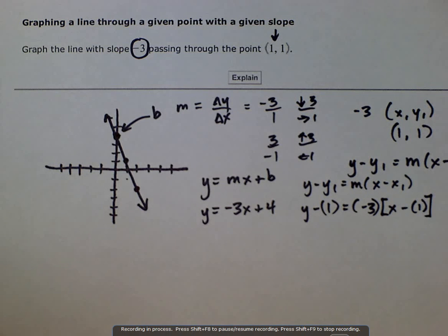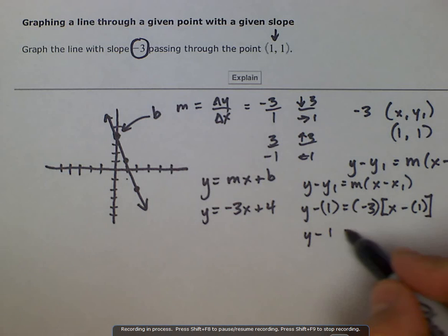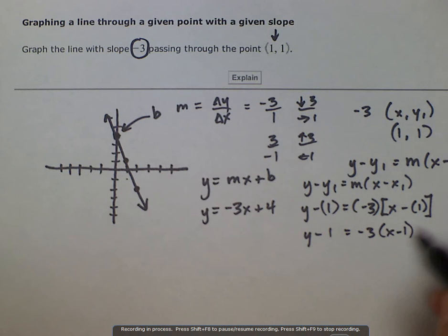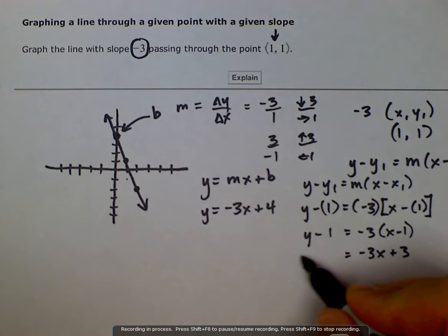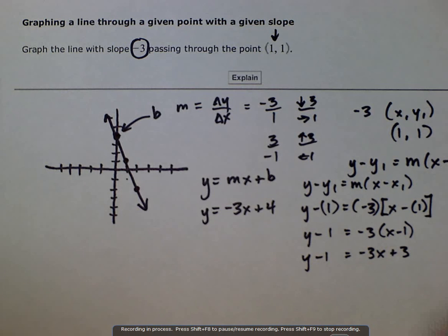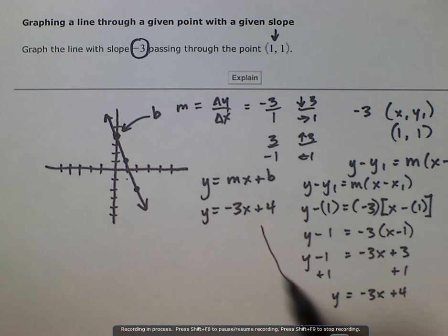So then you just simplify from there. Y minus 1 is equal to negative 3 times x minus 1. And then you would distribute, negative 3 times x is negative 3x, negative times a negative is a positive. And then you have y minus 1 over here. Then we would just use opposite operations to get y by itself, adding 1 to both sides. And we finally get y equals negative 3x plus 4, which is our, if we compare, we get the same answer, and that is the equation of the line.